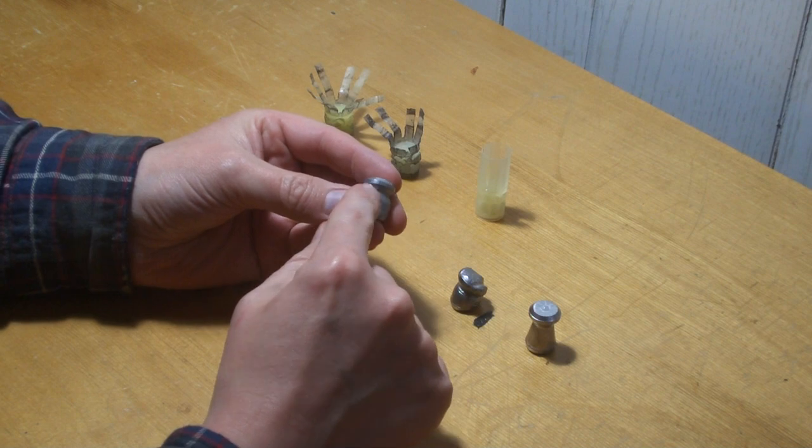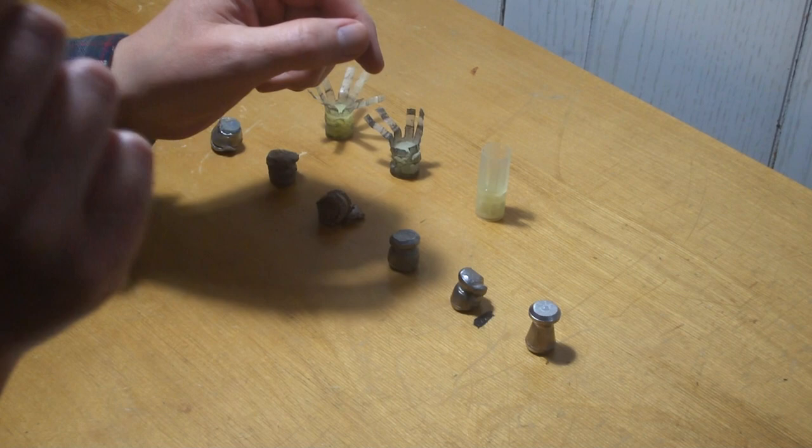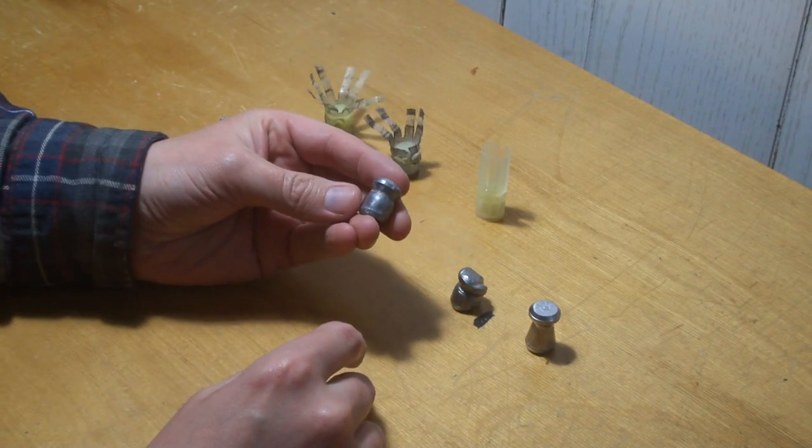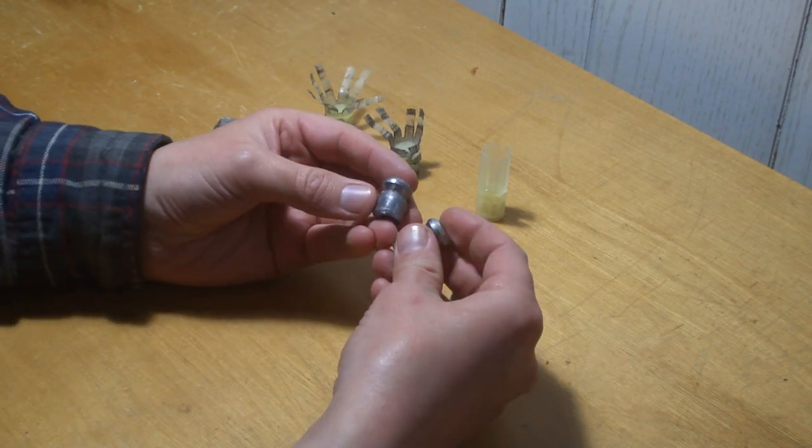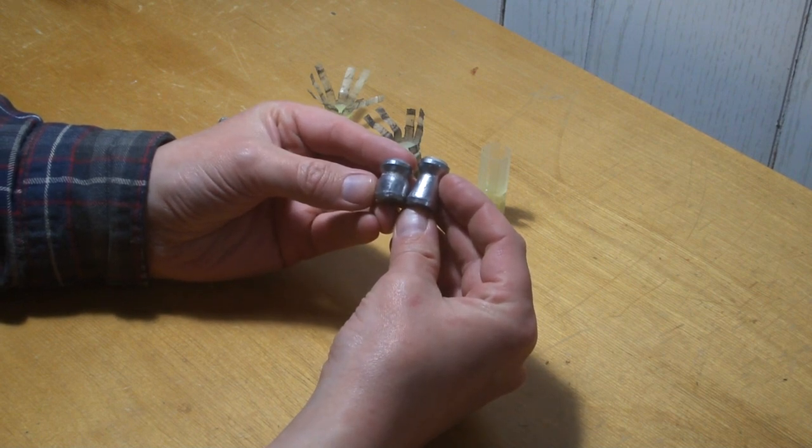This one went through the target, through a piece of birch about that big and then buried into the ground. These are all wheel weight. I do have some with pure lead but I haven't tried those yet. You can see how much it smushes. The base expands quite a bit.